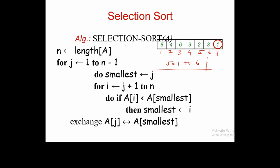Initially for j equal to 1, the assumed minimum is at index 1. The inner loop executes from i equal to j plus 1. For j equal to 1, it executes from 2 to 7, so there are 6 iterations total.